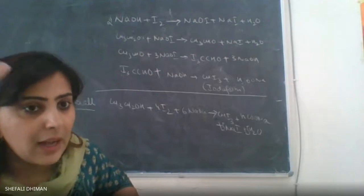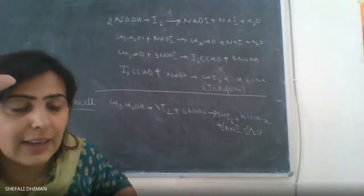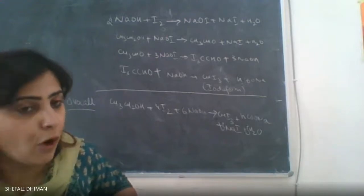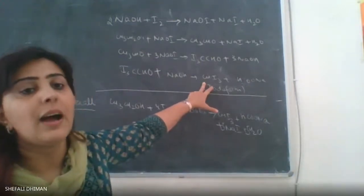You will keep it for some time and when it finally disappears you will find that there's going to be a yellow color precipitate being formed and those are of Iodoform.